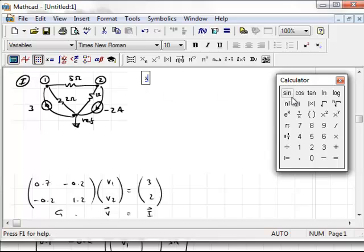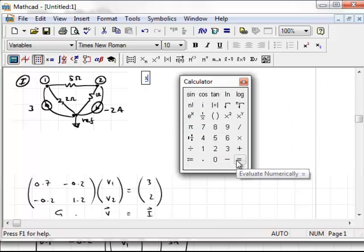You look over here on the calculator palette and you notice there are two different types of equals here. This is what you would recognize as equal, but the context that pops up says evaluate numerically, and the shortcut is just the equal sign. Over here, this is definition, and the shortcut is the colon.